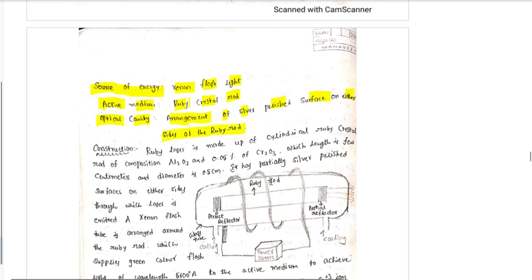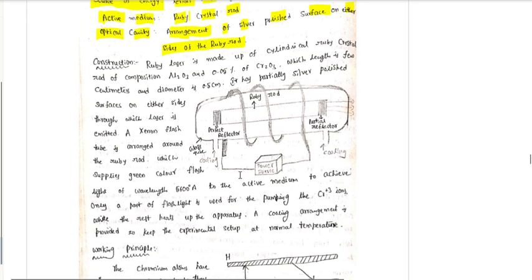This is the construction. The Ruby Laser is made up of a cylindrical ruby crystal rod composed of Al₂O₃ (aluminum trioxide) and 0.05% of chromium trioxide (Cr₂O₃).